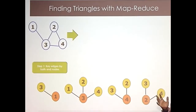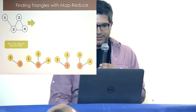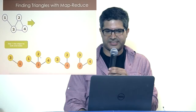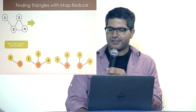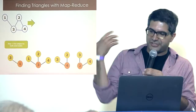The only edge that creates a triangle for node three is between two and four. Since there is an actual edge between two and four, then three, two, and four is a triangle. But an actual edge between one and two does not exist, so three, one, two is not a triangle. All we have to do is enumerate all potential triangles at this stage, then run another MapReduce job to check whether each edge actually exists.